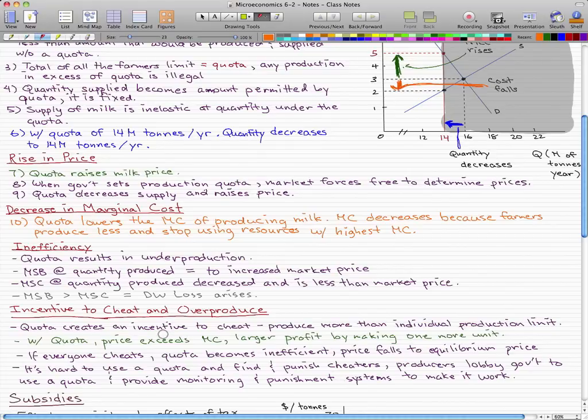And that's pretty much it. You gotta know that it's hard to enforce a quota and to find and punish cheaters. That's why producers have been lobbying government to use a quota and provide monitoring and punishment systems to make it work. But that's just so they can make more money.